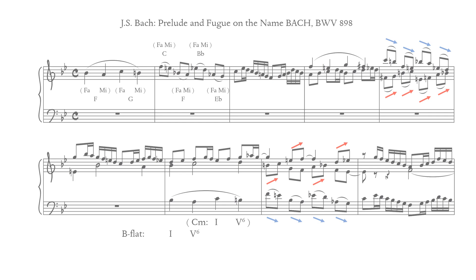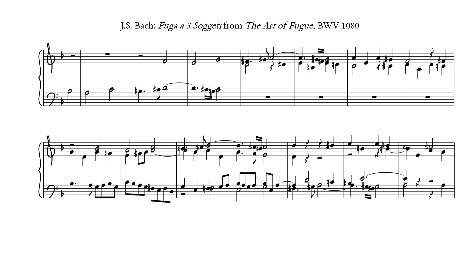This brings us back to the example from the beginning of the video. Bach places the motif in the context of the key of D minor. Bach's harmonization treats the first B-flat as the third of a G minor triad and the A as the root of an A minor triad in first inversion. The C is treated as the seventh of a dominant seventh chord, and the B that it resolves to is the third of a G minor triad.